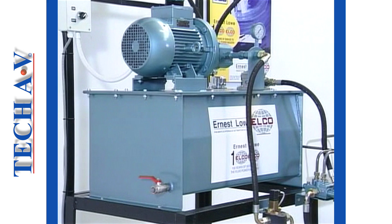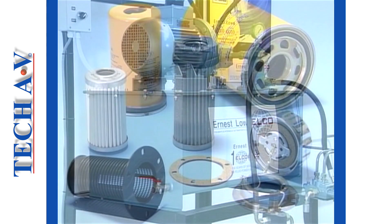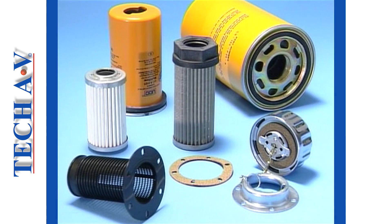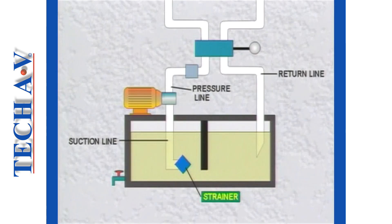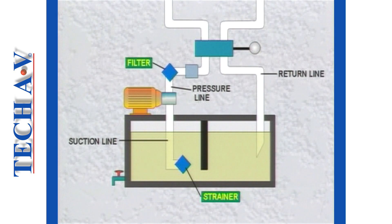Welcome back, as we now look at a typical system and learn to identify some commonly used filter and strainer types. As a general rule, strainers are used on the suction side of a system, while filters are used on the pressure and return lines.